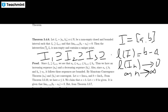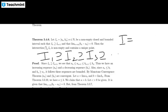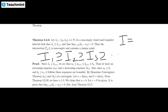Looking at the proof: central to the proof is the Monotone Convergence Theorem. We also require the order preservation of convergence for sequences, and for the uniqueness part we will use the Squeeze Theorem, also called the Sandwich Theorem.